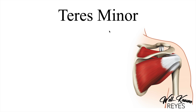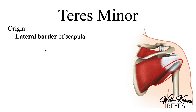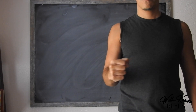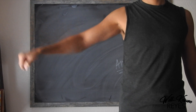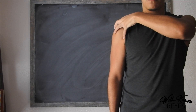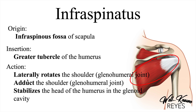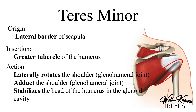Next we have the teres minor, which is right here. This one originates at the lateral border of the scapula, right here, also known as the axillary border because it is closest to the armpit. It inserts also on the greater tubercle of the humerus. So the supraspinatus, infraspinatus, and teres minor all insert at the greater tubercle of the humerus — that's important. Its actions are to laterally rotate the shoulder at the glenohumeral joint, adduct the shoulder at the glenohumeral joint, and stabilize the head of the humerus in the glenoid cavity — the same as the infraspinatus.